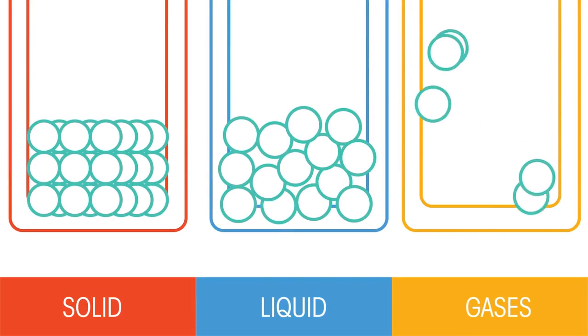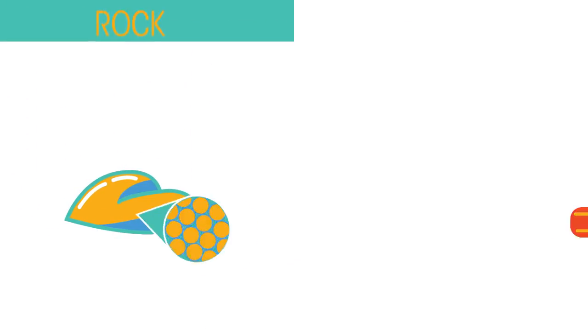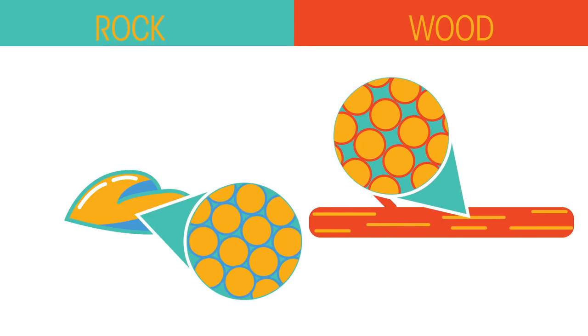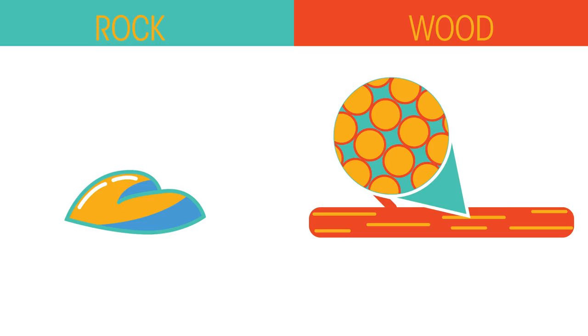So from the formula, we saw that density is based on the mass and size of an object, but it is also based on the arrangement of the atoms it's made of. Inside each object are atoms and molecules. How closely these atoms and molecules are packed together determines the density. In the rock, the molecules are squished tightly together, whereas in the wood, they are more spread out, and in air, much more spread out.